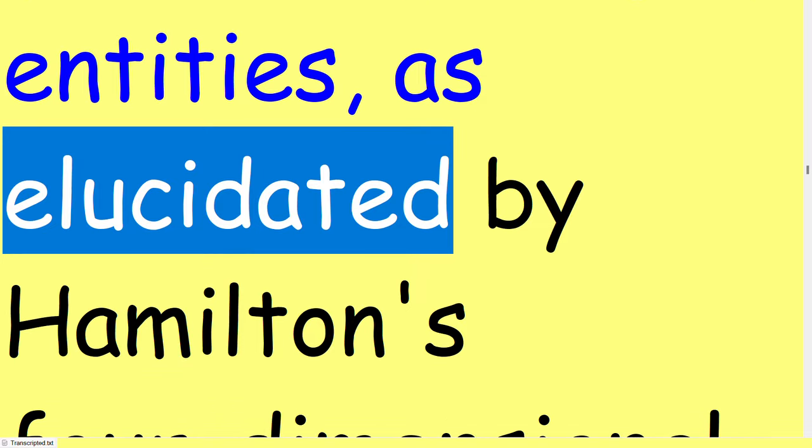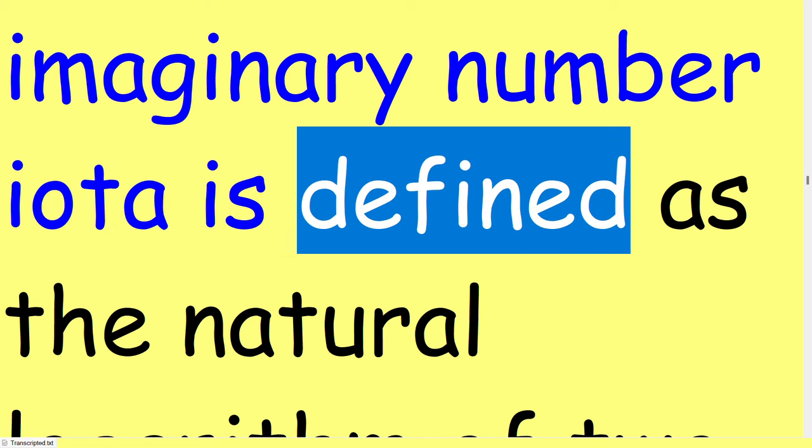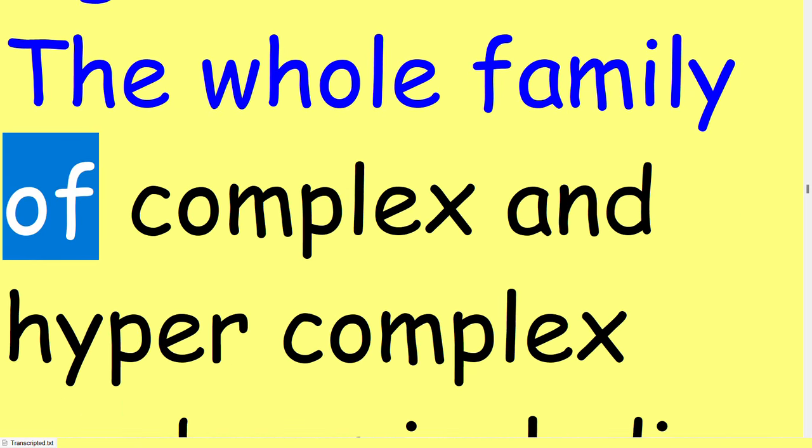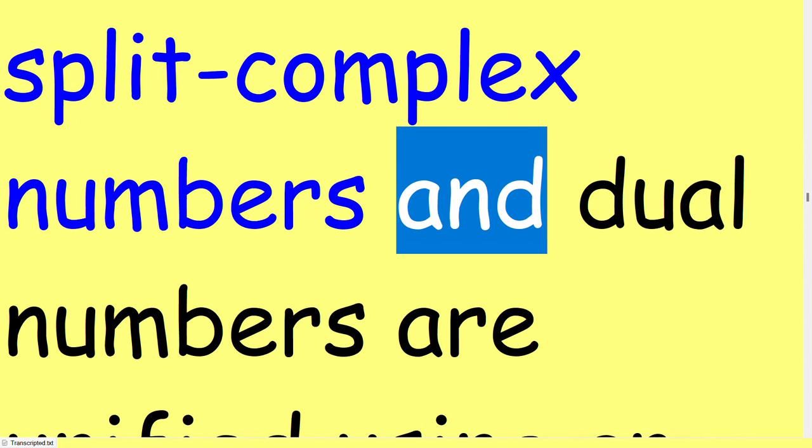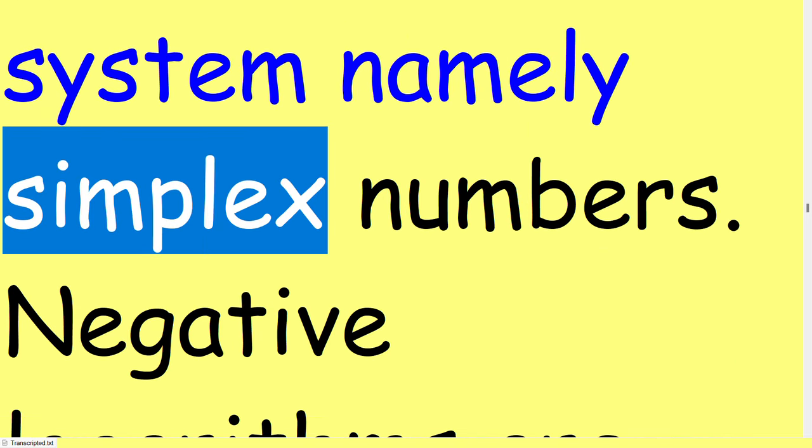The imaginary number iota is defined as the natural logarithm of two. The whole family of complex and hyper-complex numbers including split complex numbers and dual numbers are unified using an extended number system, namely simplex numbers.